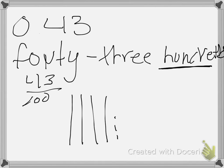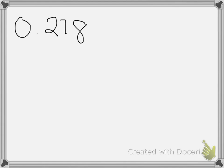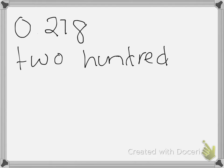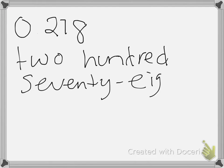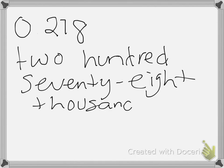You could also write it in the place value chart. What if I had the number 278 thousandths? My word name would look like this: 278 thousandths.